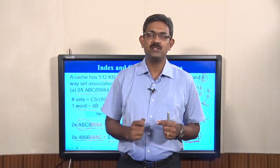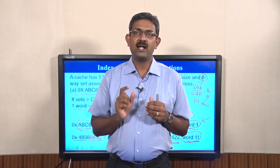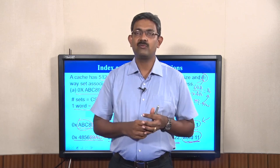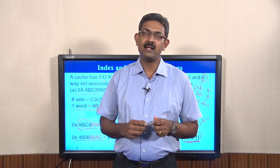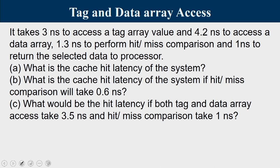To summarize: given cache details and an address, find the set index portion to determine which set to search. Convert the binary index value to decimal to get the set number. Then find the offset to determine which word to transfer. The next problem is on tag and data array access: it takes 3ns to access the tag array, 4.2ns to access the data array, 1.3ns for hit/miss comparison, and 1ns to return data to the processor.